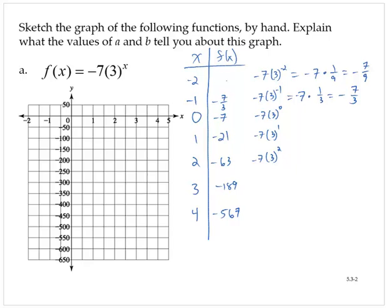So plotting some points: negative 2, negative 7 ninths; negative 1, negative 7 thirds. Actually, those should be closer to the axis.